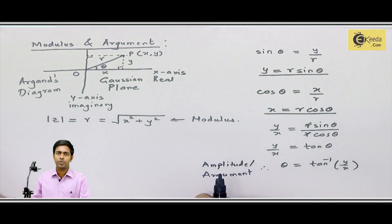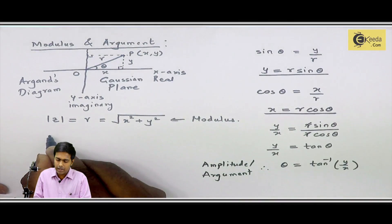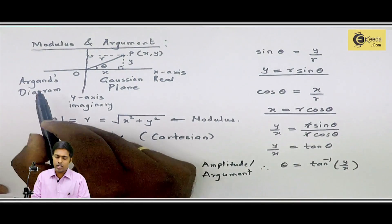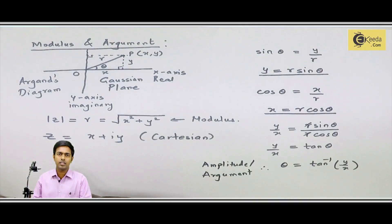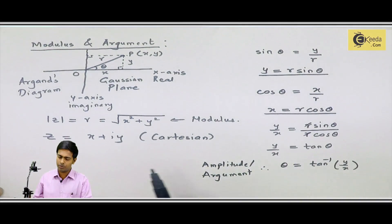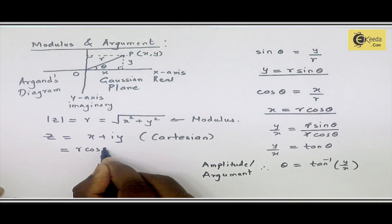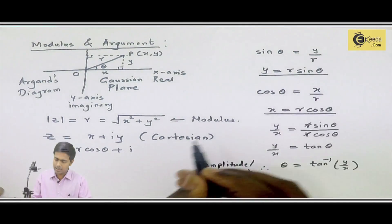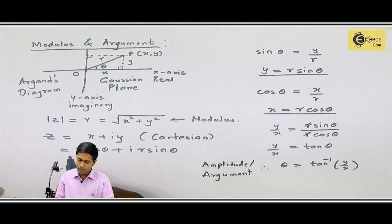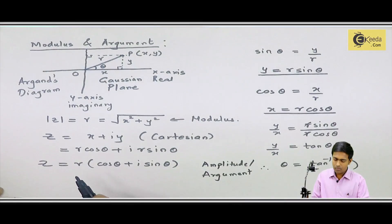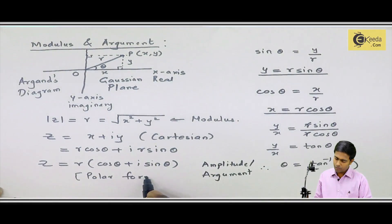At the start of this chapter, I explained what is the Cartesian form of a complex number. In Cartesian form, z is represented as x + iy. Now, using the Argand diagram, we will see how this complex number is represented in polar form. Using the substitution derived earlier — x = R cos theta and y = R sin theta — I can take R as a common factor and get z = R(cos theta + i sin theta).